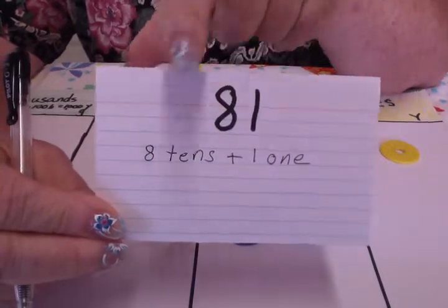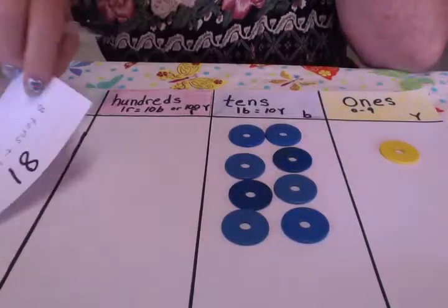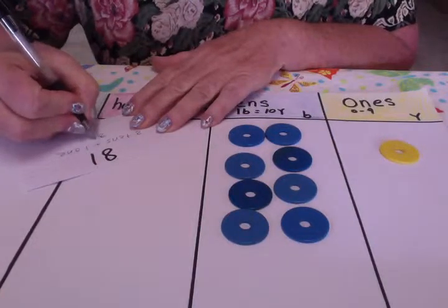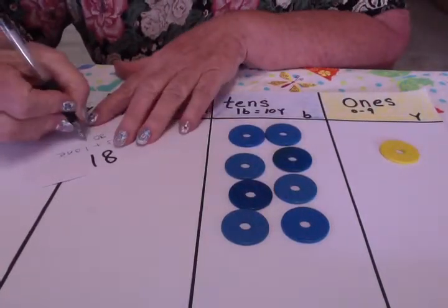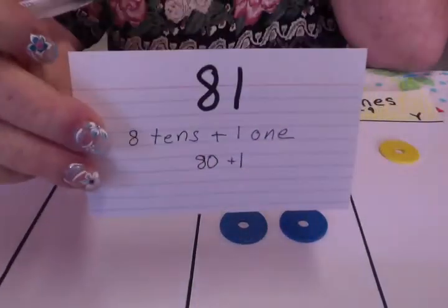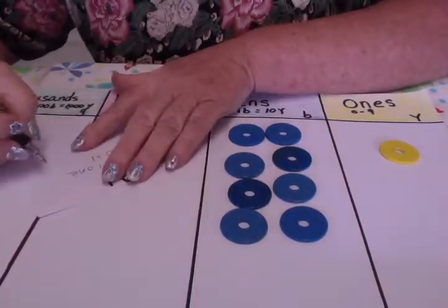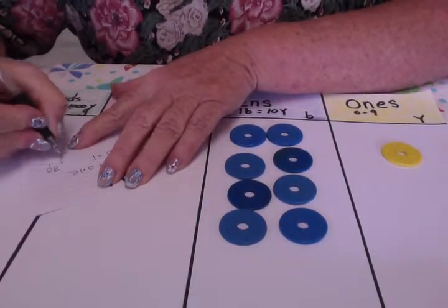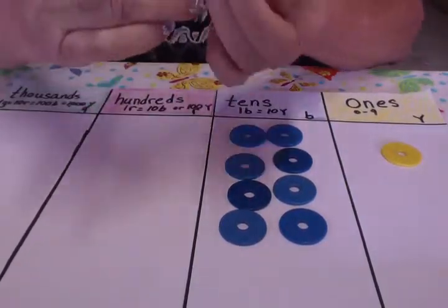Sometimes you actually see the numbers themselves written out, and we'll practice that next time. You will also see this written out as 80 — which is what 8 tens is — plus 1. And you can see that if I write it in a vertical way, it would be 80 plus 1. And then if I add it, there indeed is your 81. That's how that number is written.